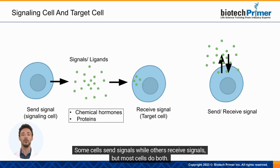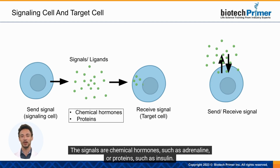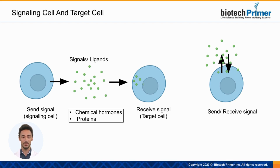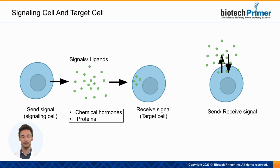Some cells send signals, while others receive signals, but most cells do both. The signals are chemical hormones, such as adrenaline, or proteins, such as insulin. They are produced within specialized cells — the signaling cell — and released to find their target cells. The signal is often called a ligand. In some cases, the signaling cell and target cell may be the same cell.